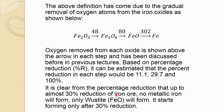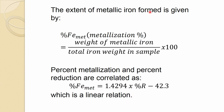Therefore, one has to define a degree of metallization or percentage of metallization in a different way, because only after 30% reduction does metallic iron come in. The extent of metallic iron formed is given by: percentage of metallic iron equals weight of metallic iron divided by total iron weight in the sample, multiplied by 100. This gives the metallization or degree of metallization.